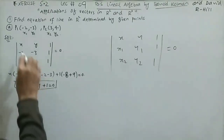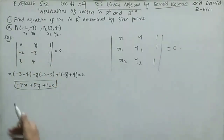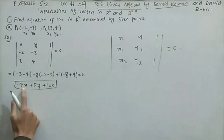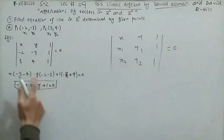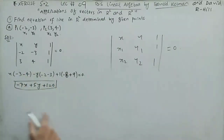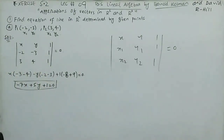Expanding the determinant along row 1 gives the equation −7x + 5y + 1 = 0. This is the required equation of the line passing through the given points P1 and P2.